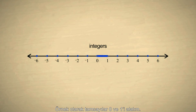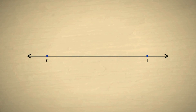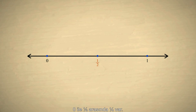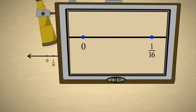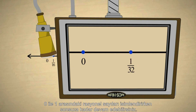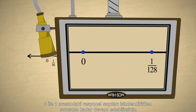Take, for example, the two integers zero and one. Between zero and one is the rational number one-half. Between zero and one-half is one-fourth. Between zero and one-fourth is one-eighth, and so on. You can continue this forever, naming an infinite number of rational numbers between zero and one.